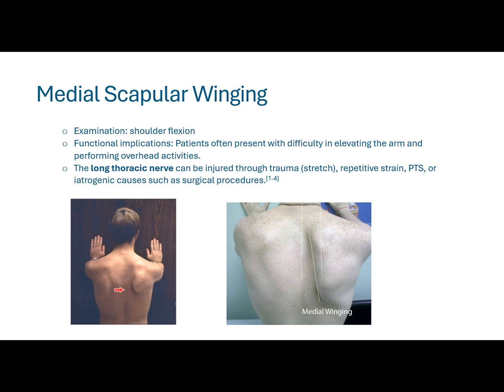So how do we examine this? Typically we're going to want the patient to flex the shoulders and protrude forward — having them lean up or push against a wall can really bring this out. During this motion, the serratus anterior should hold the scapula flush against the chest wall, and you'll oftentimes see a nice shadow and a protrusion of the scapula.